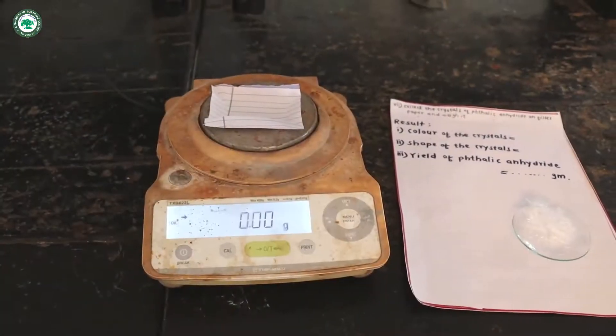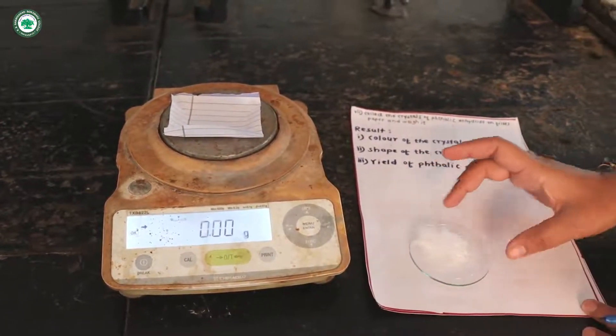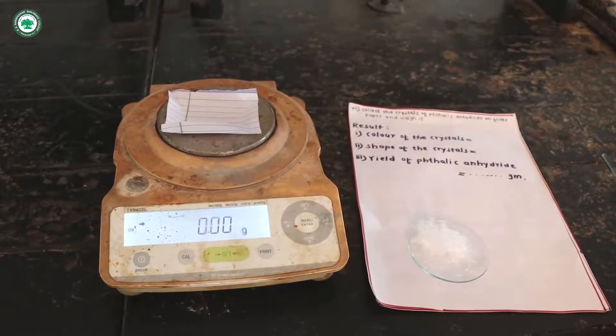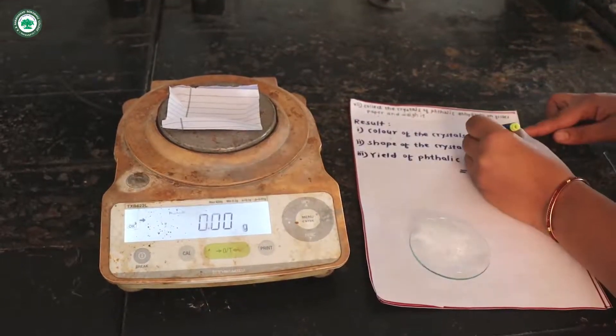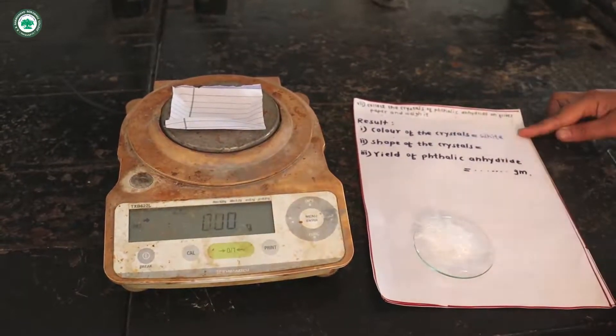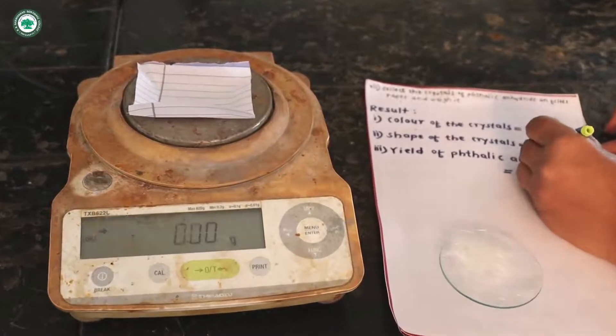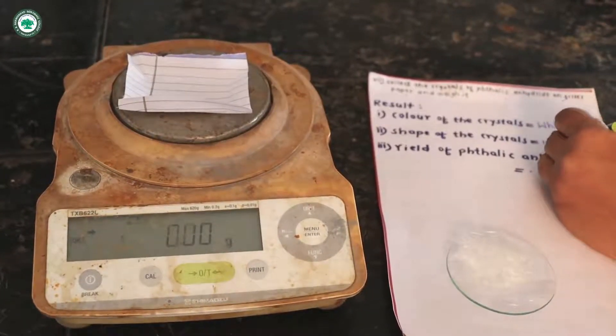After cooling, the phthalic anhydride crystals, I have collected these white color crystals on the other side of the funnel.